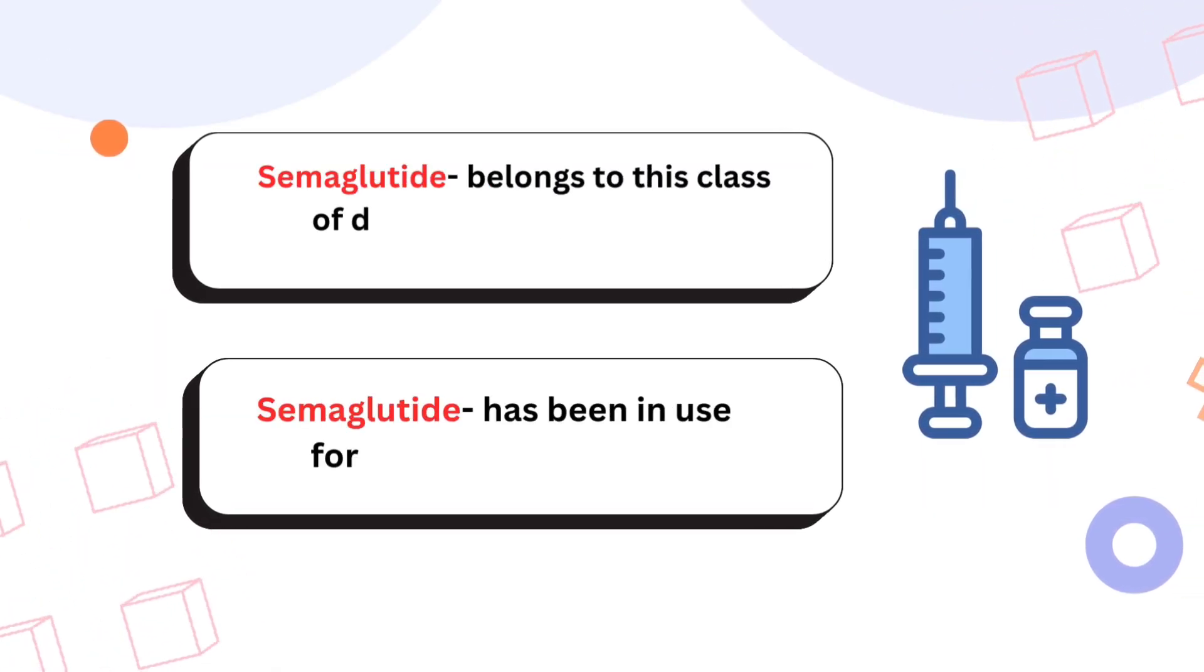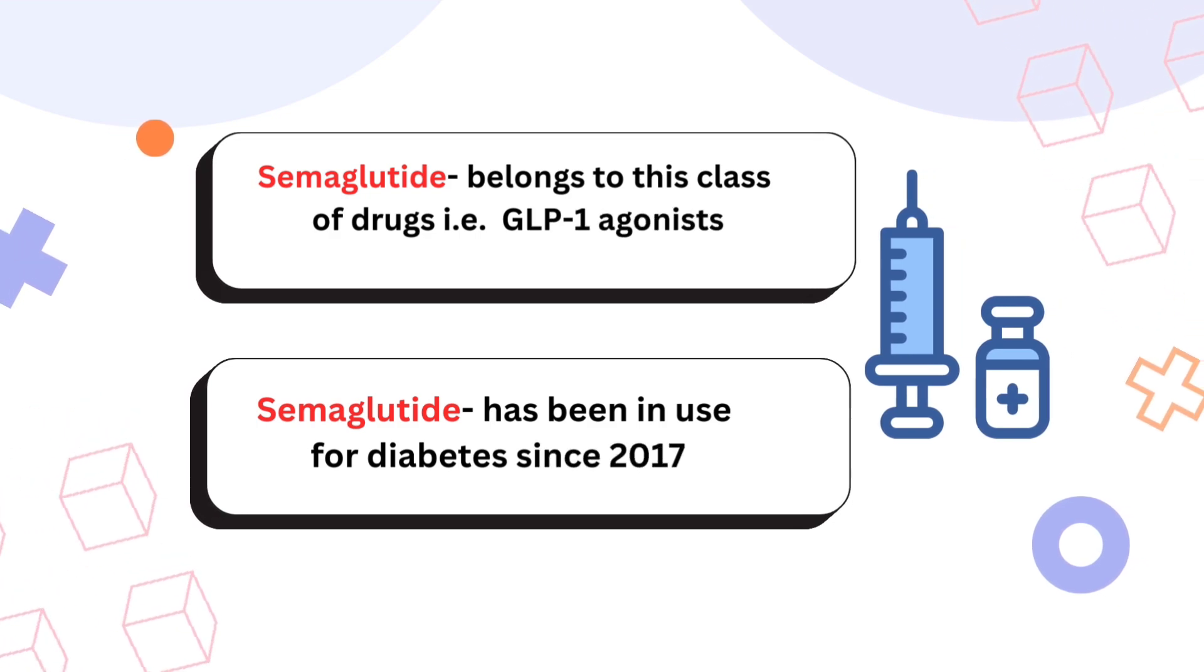Semaglutide belongs to this class of drugs GLP-1 and it has been in use for diabetes since 2017.